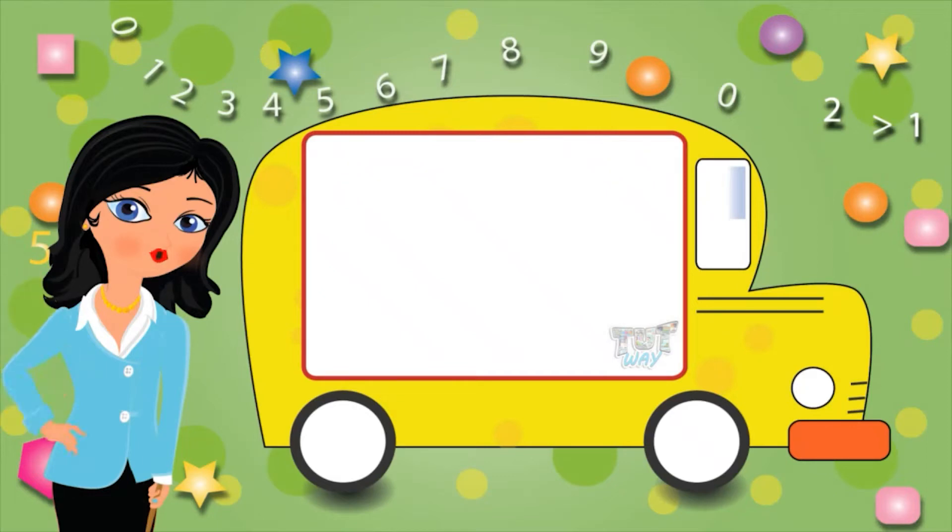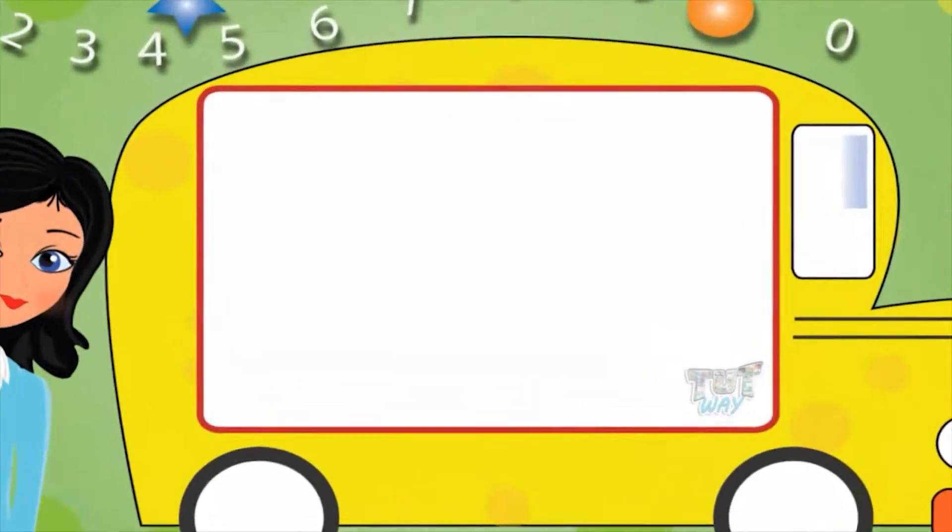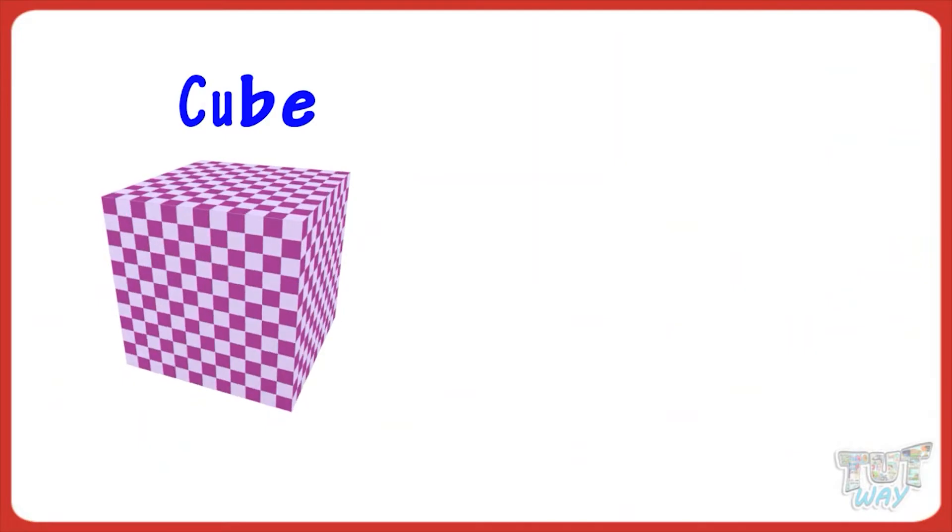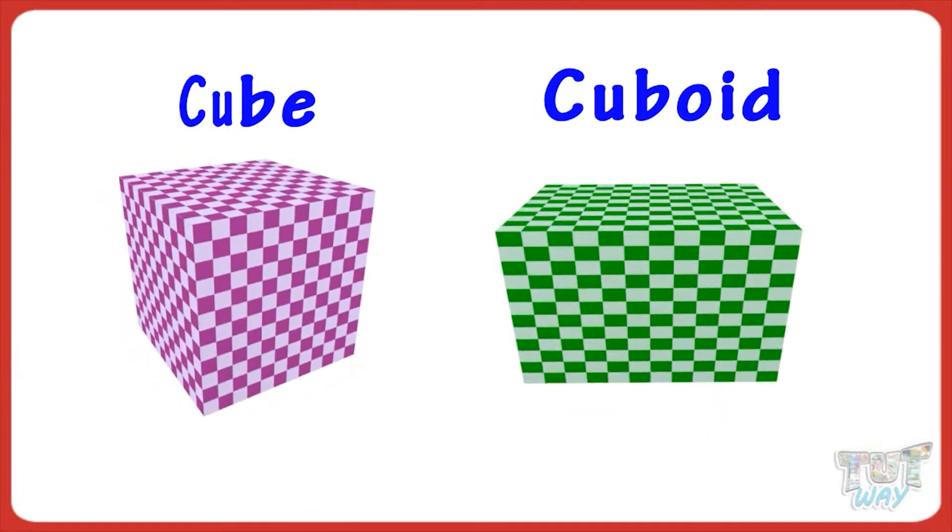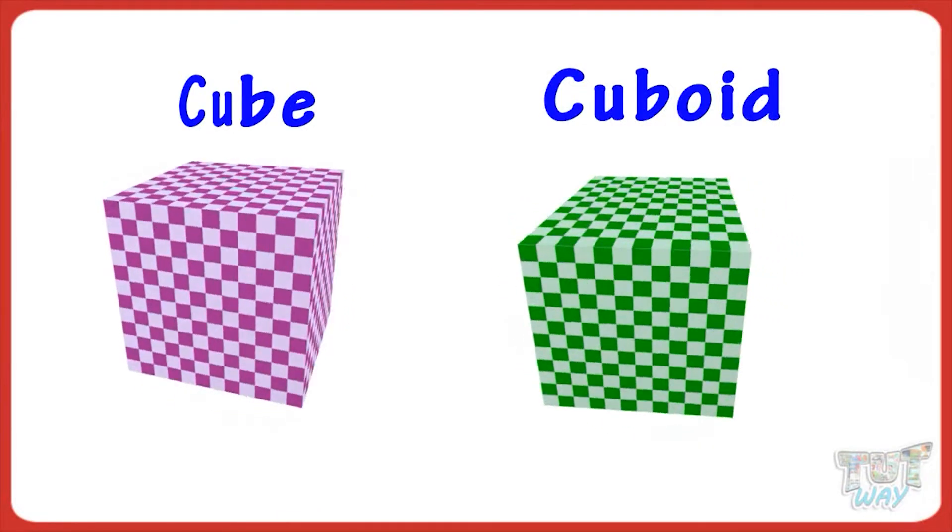Hi kids! Today we will learn about two shapes, cube and cuboid, which are 3D shapes or solid objects.